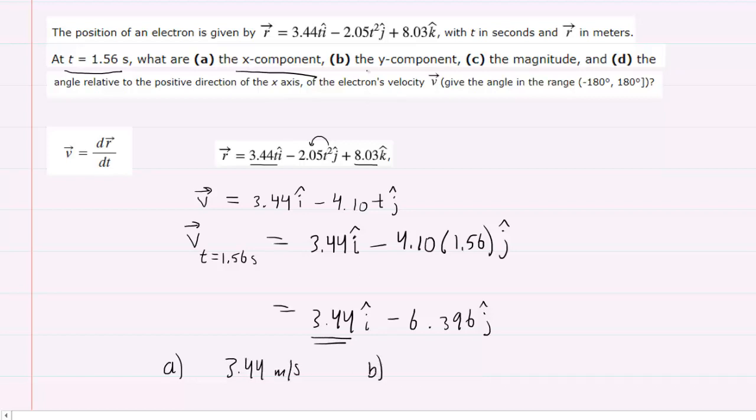For part b, we want the y component, and that's given by the j hat component, so you'll have negative 6.396 meters per second.